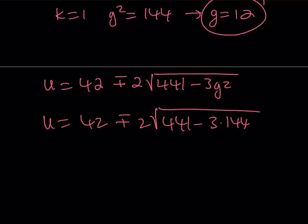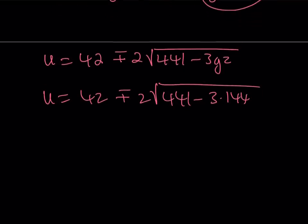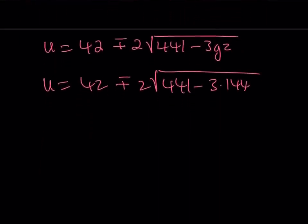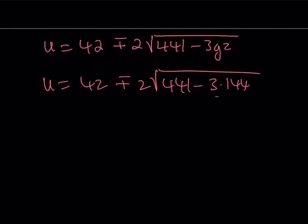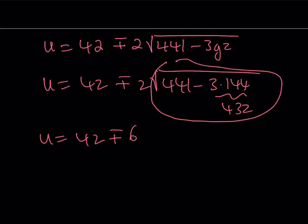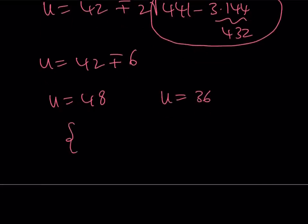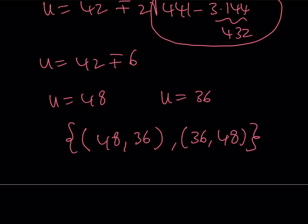u is 42 plus minus 2 times the square root of 441 minus 3 times 12 squared, which equals 144. 3 times 144 is 432. The difference is going to be 9. So u equals 42 plus minus, the square root of 9 is 3, 2 times 3 equals 6. We're getting two values. u is either 42 plus 6 or 42 minus 6. This means that our solutions are going to be two pairs: 48, 36 and 36, 48. Those are the x, y values that work, and those are the only values that work.